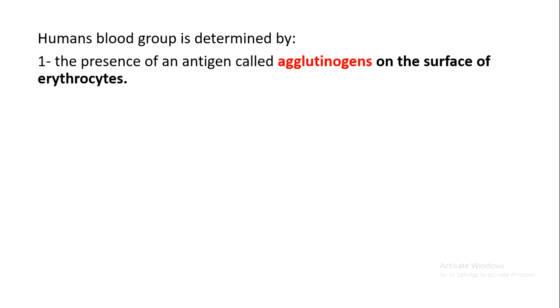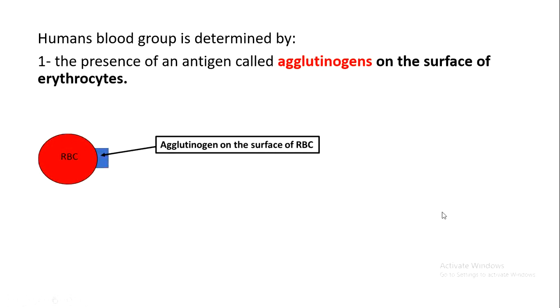A human blood group is determined by two things. The first is the presence of an antigen called agglutinogen on the surface of erythrocytes. On the red blood cells, there is a membrane protein called agglutinogen. So the agglutinogen present on the membrane of red blood cells is the first factor that determines whether my blood group is A, B, AB, or O.